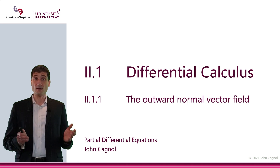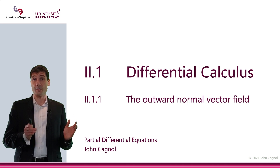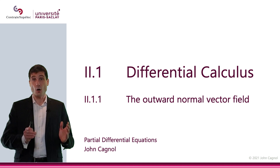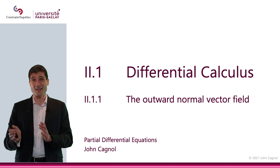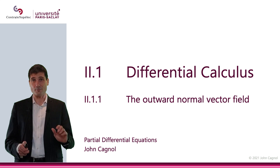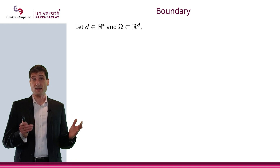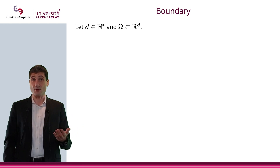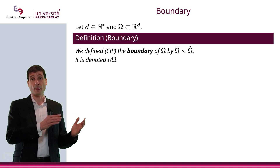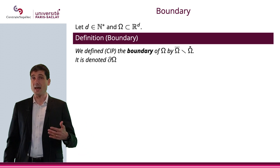In this video we're going to define the outward normal vector field. Most likely it is something that you've already heard about and covered before, so you can probably either skip this video or watch it at speed to make sure you know everything inside. Let me first remind you of what the boundary is. Consider a set omega included in R^d, where d is the dimension of the space, and define the boundary as the closure minus the interior — we define that from a topological way in this course.